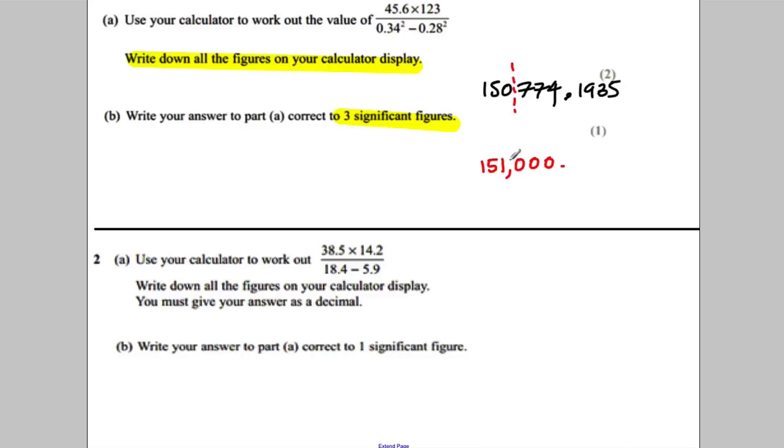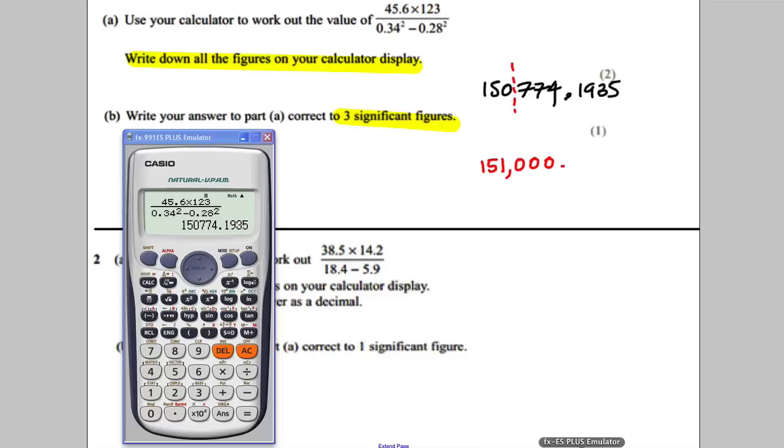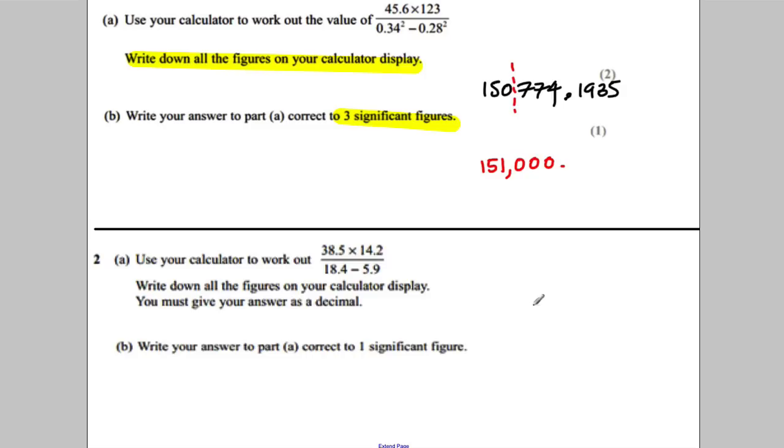Next one, again, calculator out, fraction button, 38.5 multiplied by 14.2 all over 18.4 subtract 5.9. Press equals, and it says give your answer as a decimal. So press the SD, 43.736.